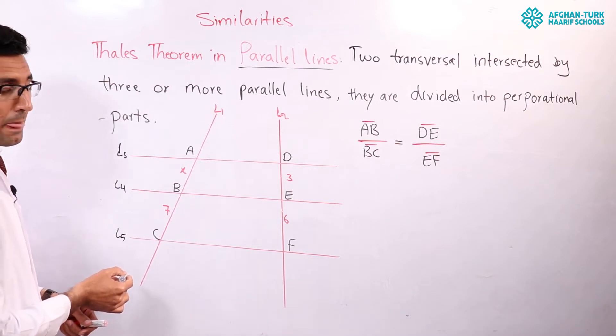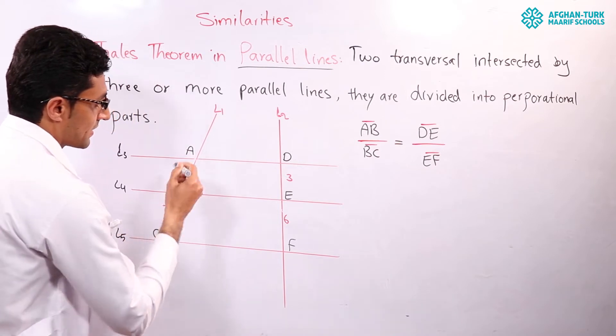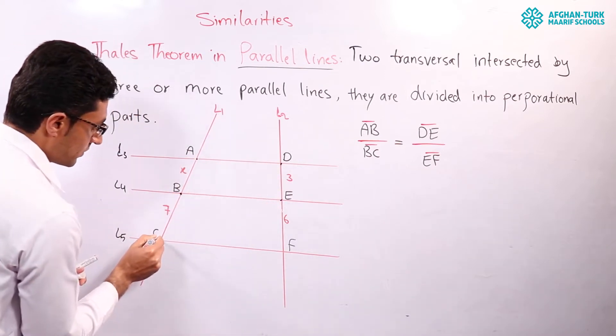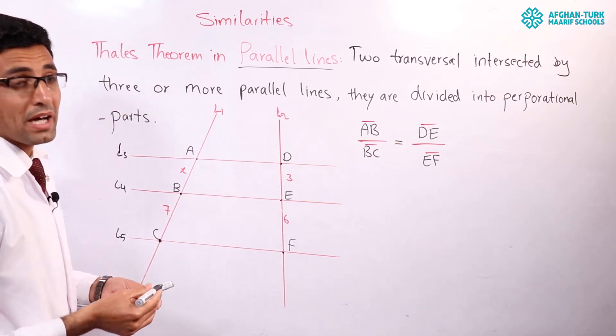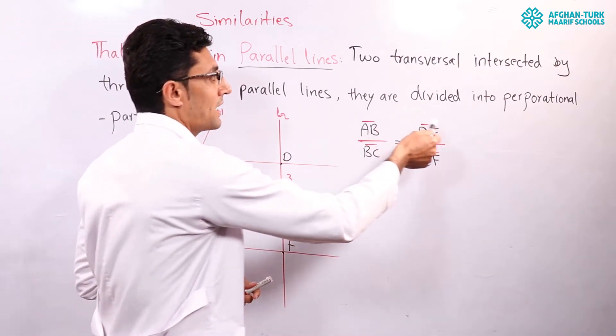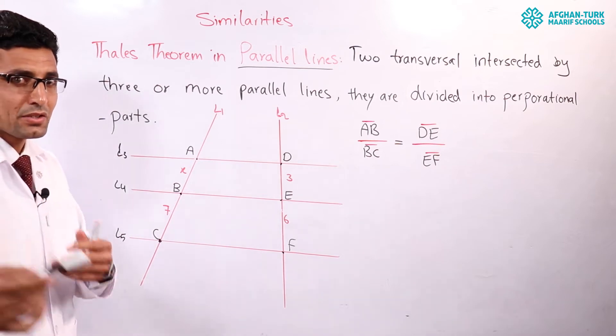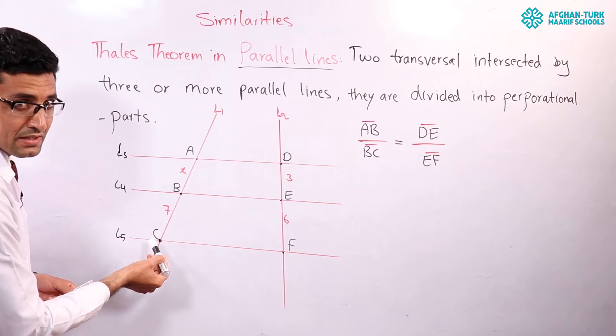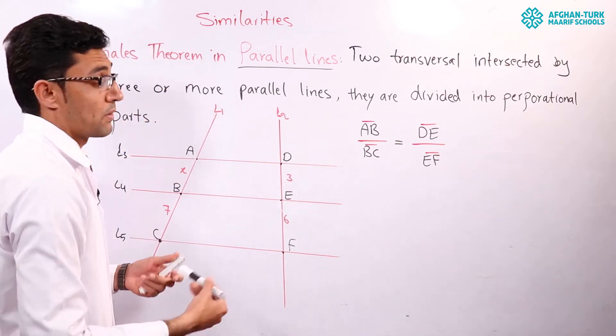Intersected here by two, by three or more parallel lines. What happens? They are divided into proportional parts. As in triangles, but in here we have ABC intersected parts and DEF intersected parts.